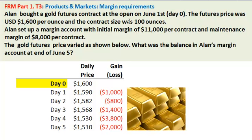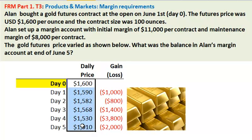Alan bought a gold futures contract at the open on June 1st, so it's a single gold futures contract. The futures price was $1,600 US dollars per ounce, and the contract size was 100 ounces. Alan set up a margin account with initial margin of $11,000 per contract and maintenance margin of $8,000 per contract. The gold futures price varied as shown below, and you're given this price series.